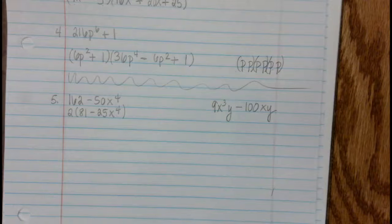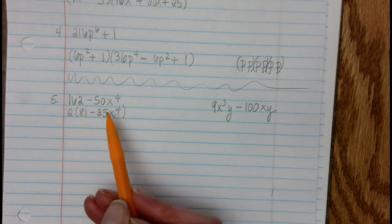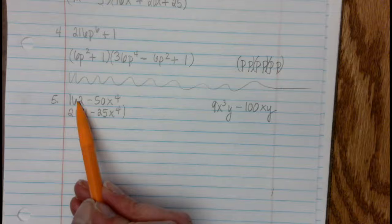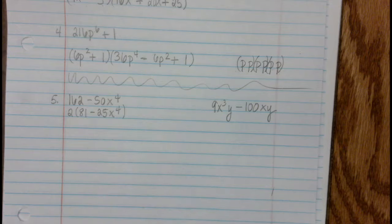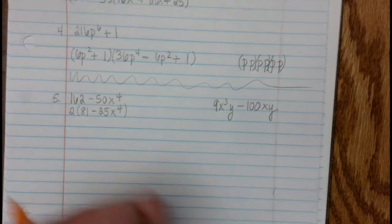So again, this is a binomial, and that means 2 terms. Same thing with the 2 terms with the original problem, and it's the difference between two squares.